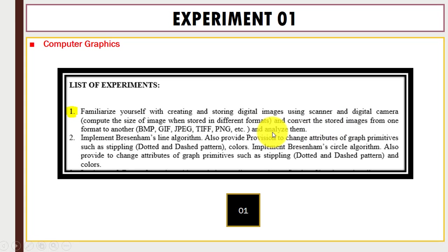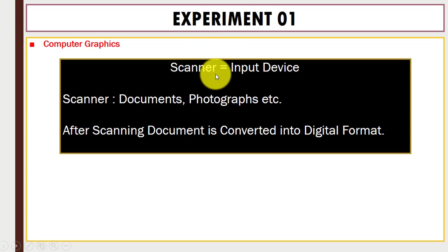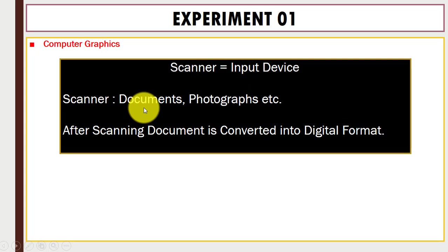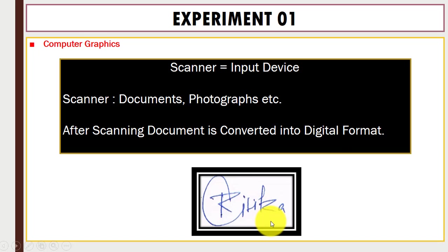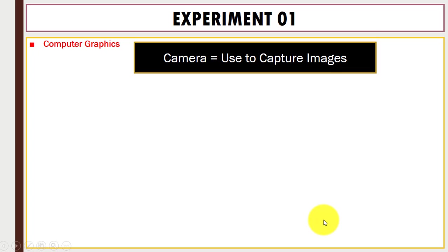Before the experiment, first we have a scanner, which is an input device. Using a scanner you can scan documents and photographs, and after scanning, these documents or photographs are converted into digital format. For example, you can see a signature on the screen — this is a scanned document converted into digital format.